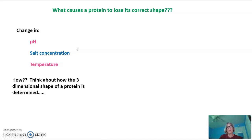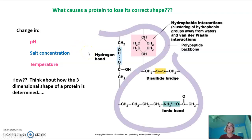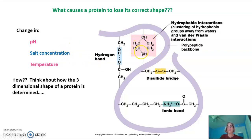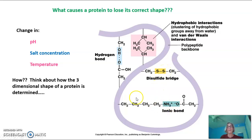Think about how the three-dimensional shape of a protein is determined. We need to go back and look at the tertiary shape of a protein and the bonds that form this tertiary shape. We could have hydrophobic interactions where two R groups cluster away from water, hydrogen bonding between two amino acids, disulfide bridges forming between the R groups of amino acids, or ionic bonds forming between amino acids.